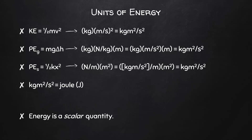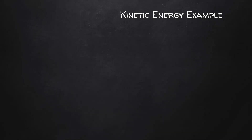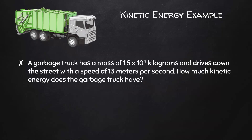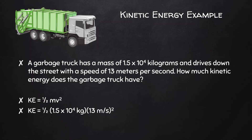Energy is a scalar quantity. Let's take a look at some examples. First, a kinetic energy example. A garbage truck has a mass of 1.5 × 10⁴ kilograms and drives down the street with a speed of 13 meters per second. How much kinetic energy does the garbage truck have? The kinetic energy equation is one-half mv squared. Substituting in our given values, the kinetic energy of the garbage truck is 1.27 × 10⁶ joules.